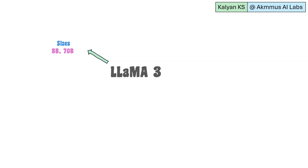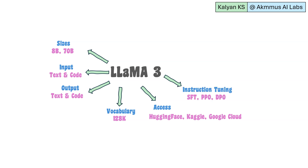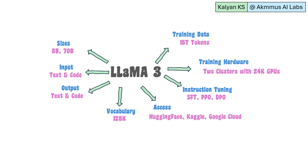Llama 3 is available in two sizes: 8 billion and 70 billion. It can handle text and code inputs and generate text and code outputs. It has a vocabulary of 128K tokens and a context length of 8K tokens. The model is instruction-tuned using a mix of supervised fine-tuning, PPO, and DPO, and was trained using two clusters with 24K GPUs. Pre-training data consists of 15 trillion tokens.